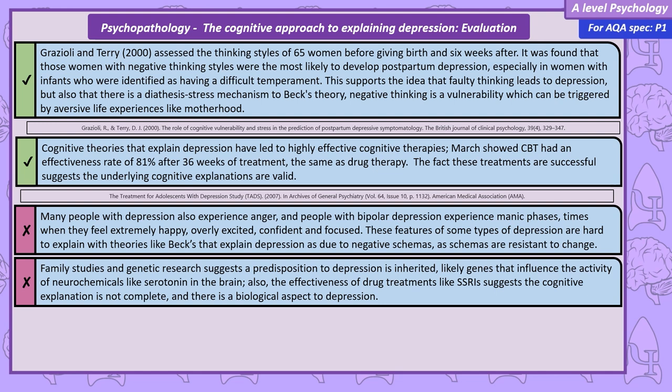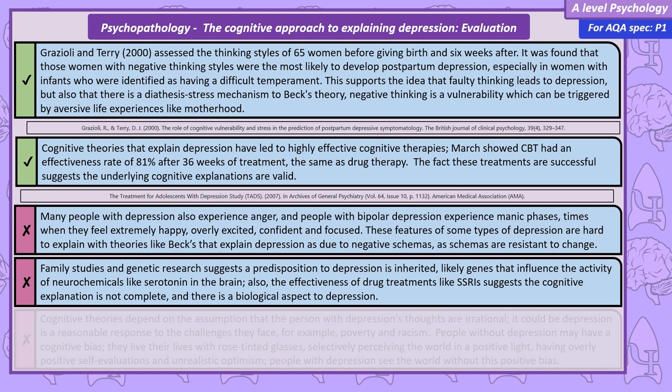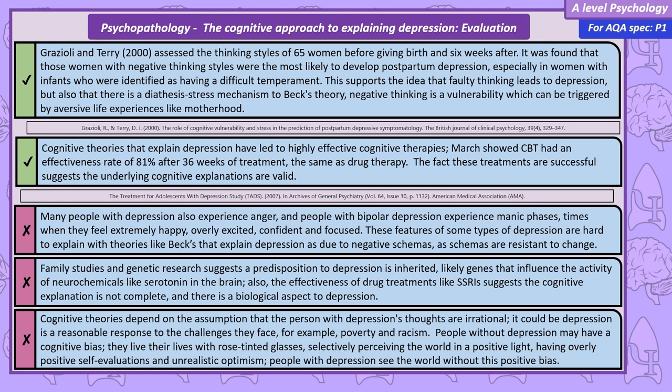Cognitive theories also depend on the assumption that the thoughts of someone with depression are irrational. It could be that their lives are objectively bad, and depression is a reasonable response. Some researchers think that the bias is with people without depression — they live their lives with rose-tinted glasses, selectively perceiving the world in a positive light, giving themselves overly positive self-evaluations, and have unrealistic optimism. The problem with people with depression then is they've lost this positive bias and unfortunately see the world how it really is.